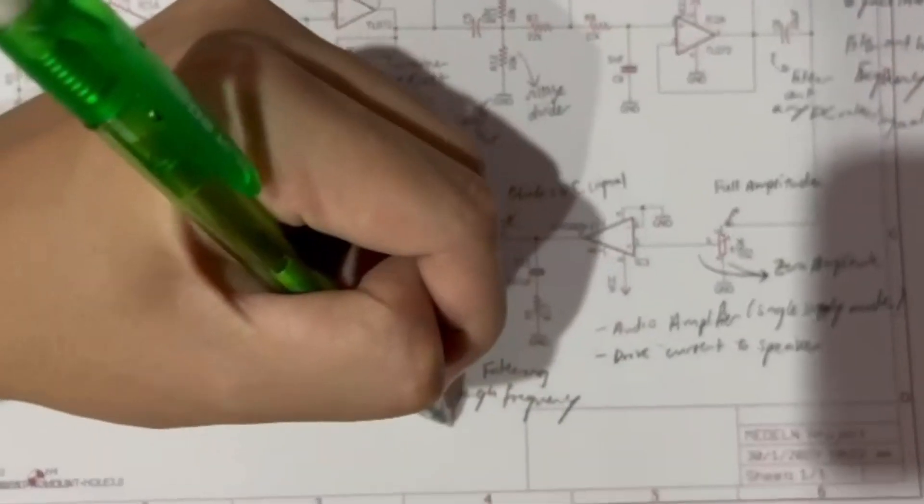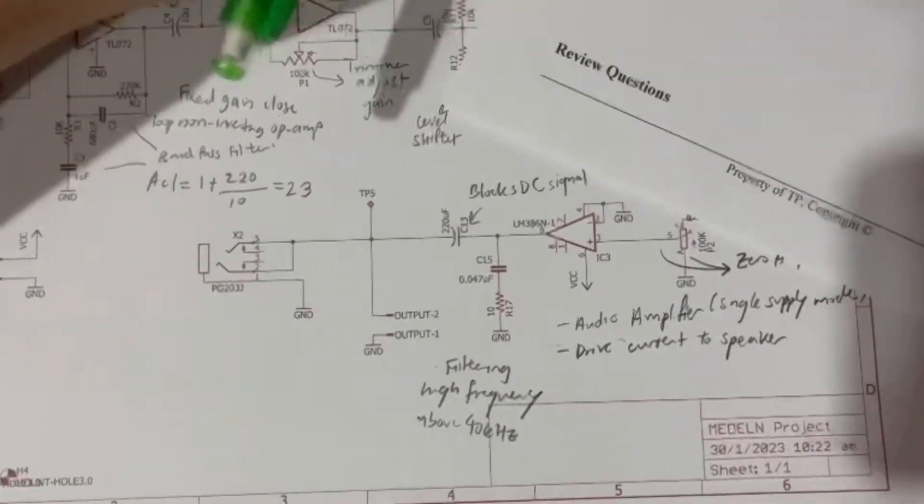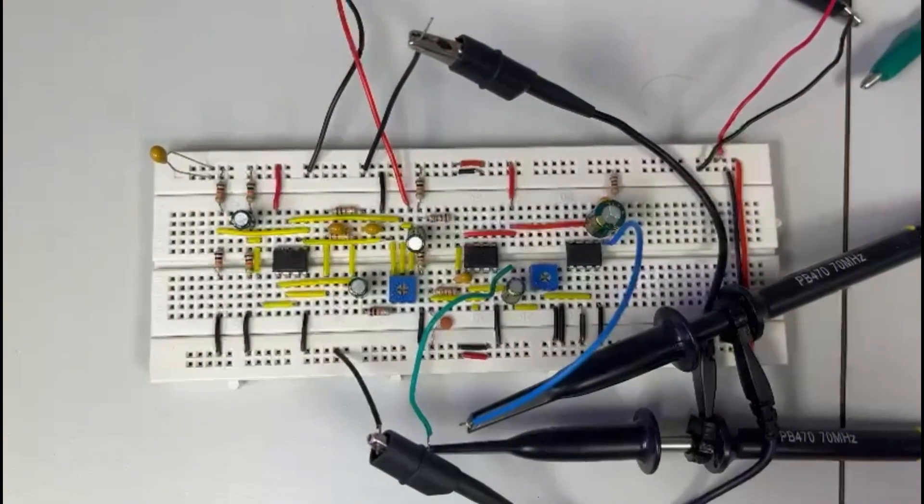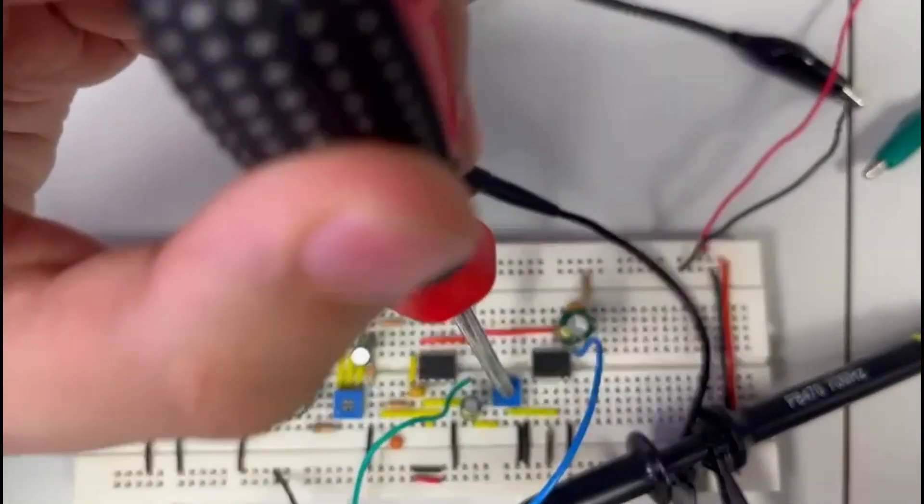Connect channel 1 to TP4 and channel 2 to test point 5. By adjusting the trimmer, we can adjust the output at test point 5. The final output will be the final sine wave attained without being saturated.